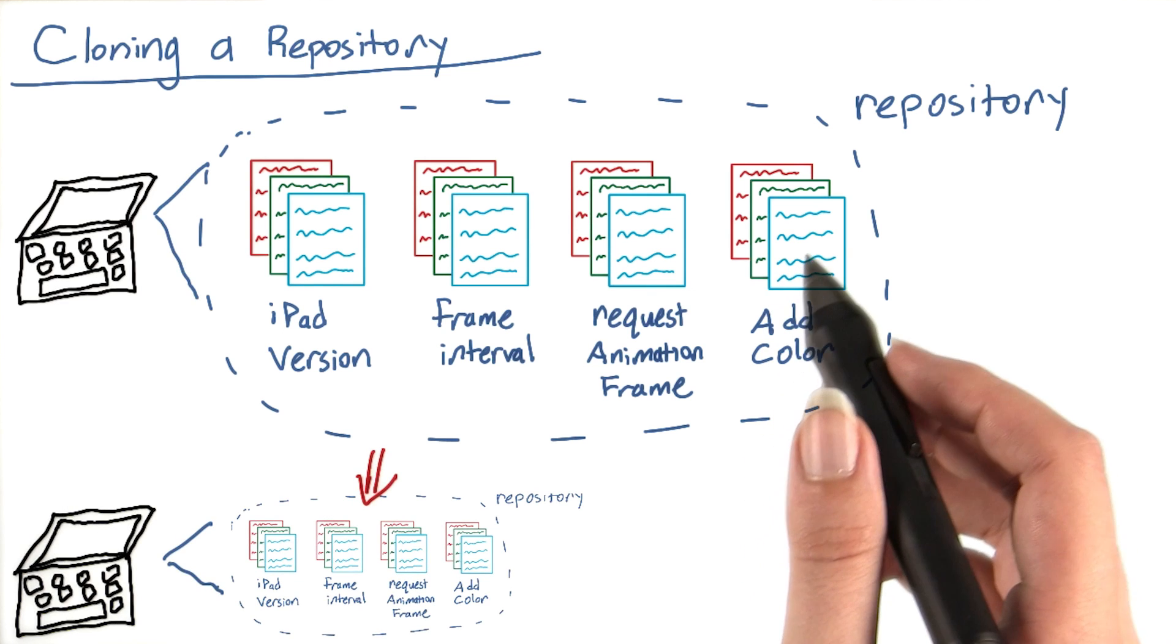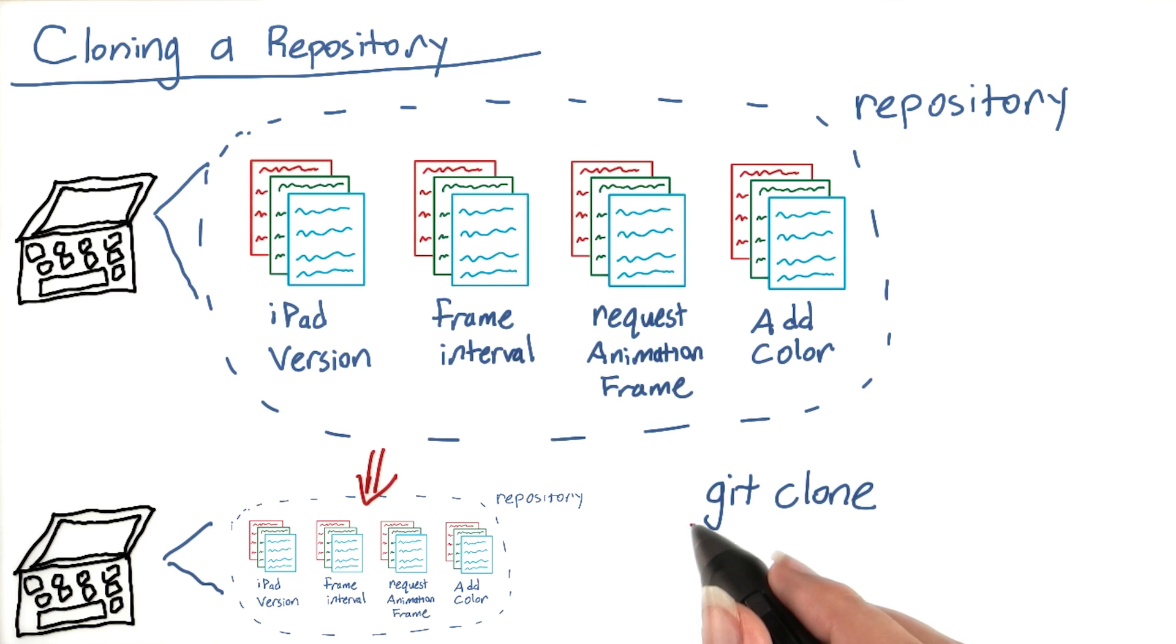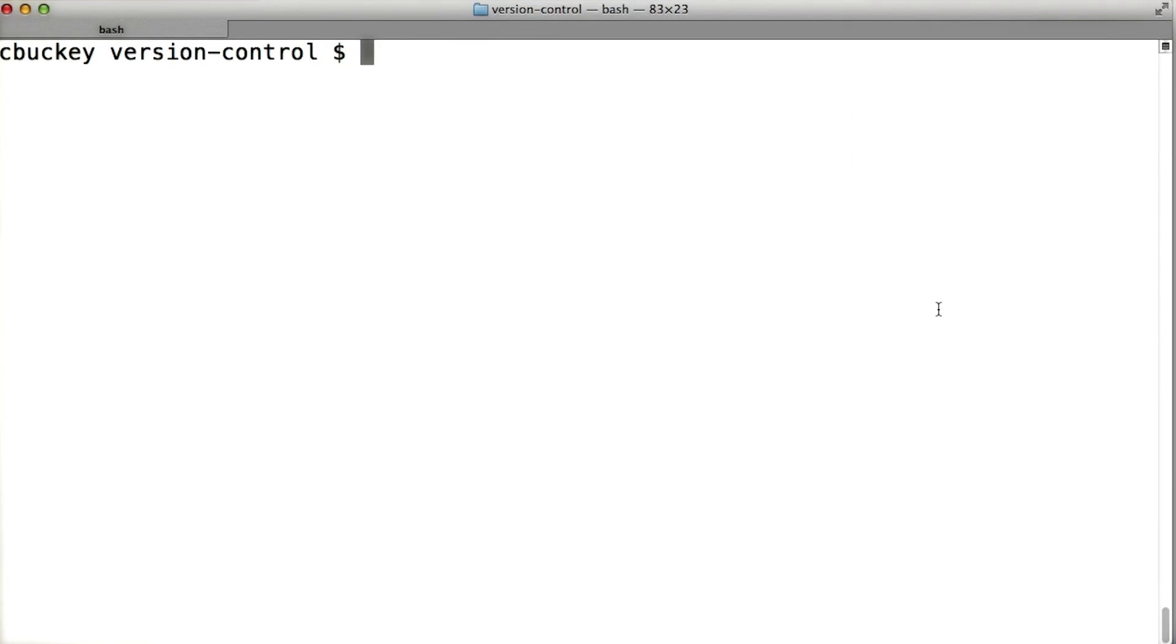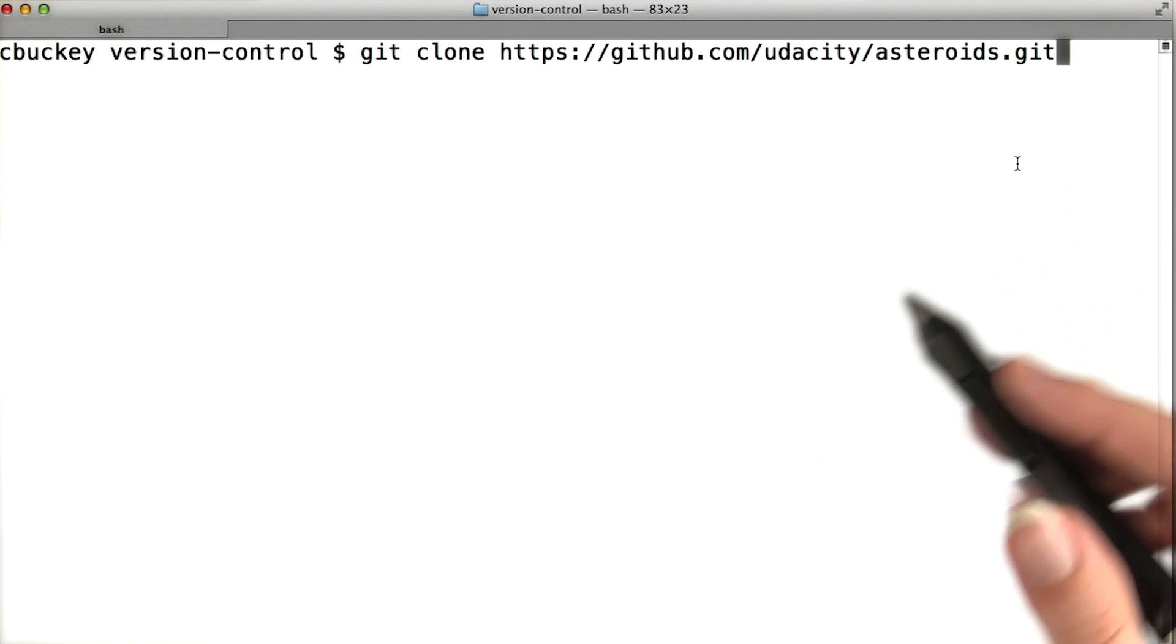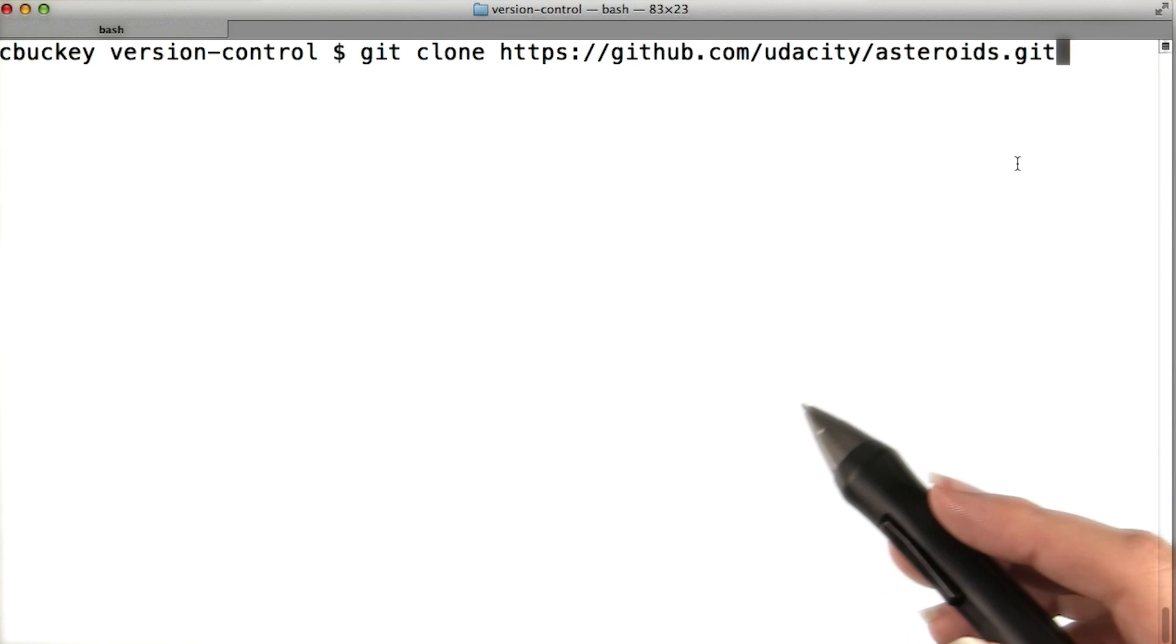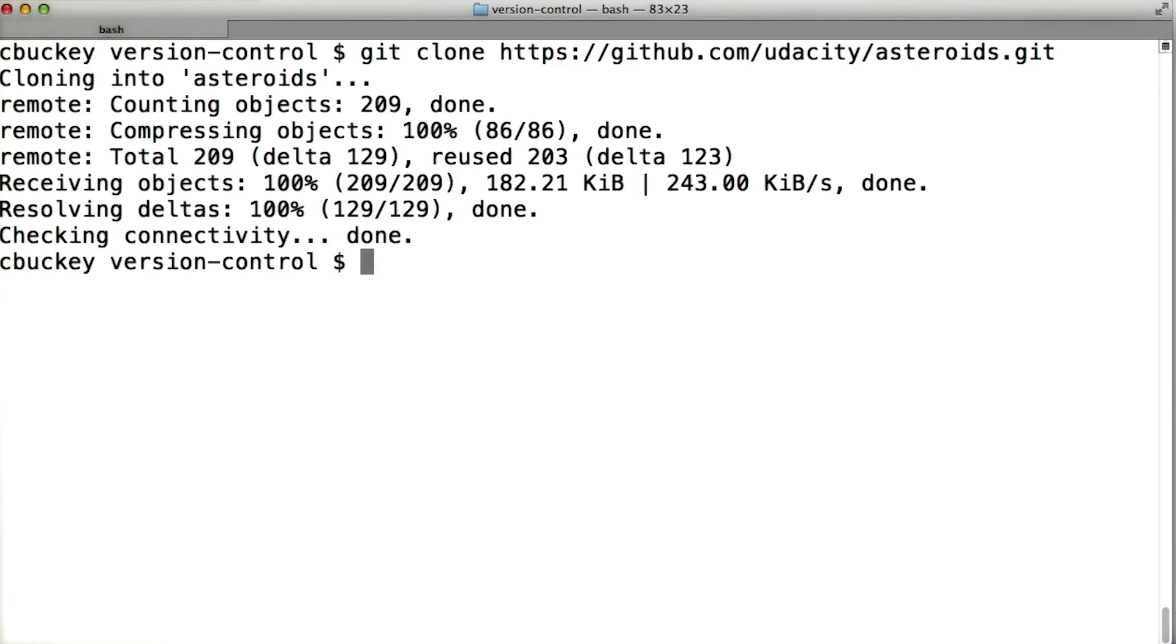Git has a command allowing you to copy an entire repository from one computer to another. The command is called git clone because it creates a clone of the repository. To use it, type git clone followed by a URL to the other repository. We've put the URL for the Asteroids repository in the instructor's notes, so go ahead and copy that URL and clone the repository like this.